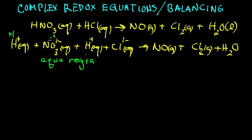Oxygen we know is minus two, more electronegative. Nitrogen is plus five. Here hydrogen is plus one, chloride is minus one.